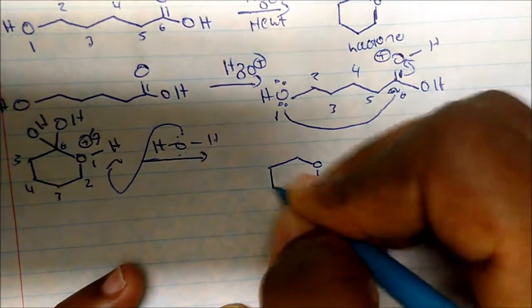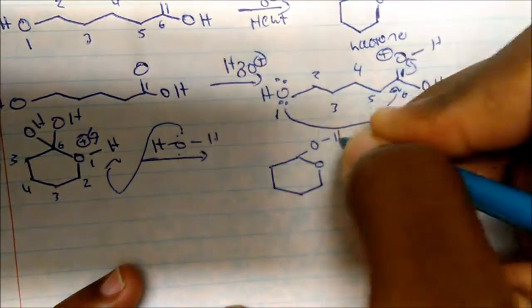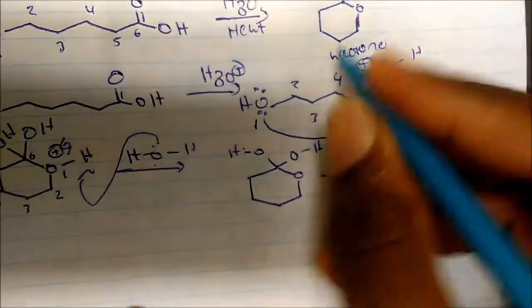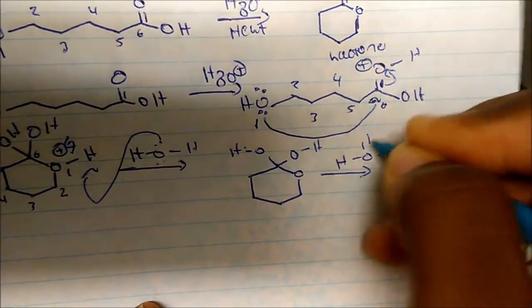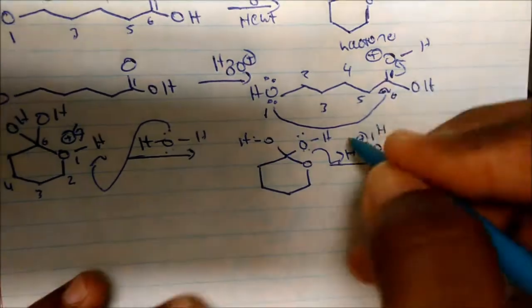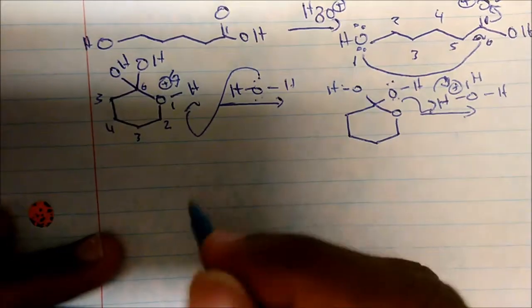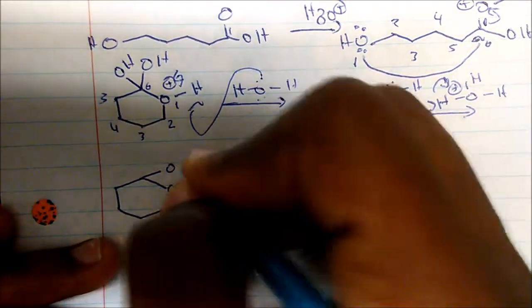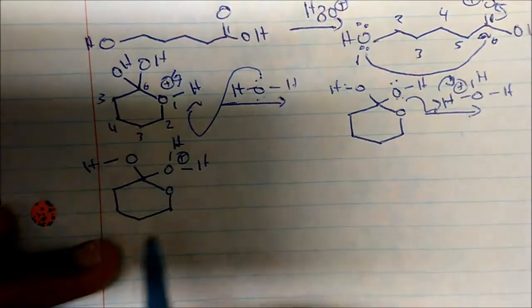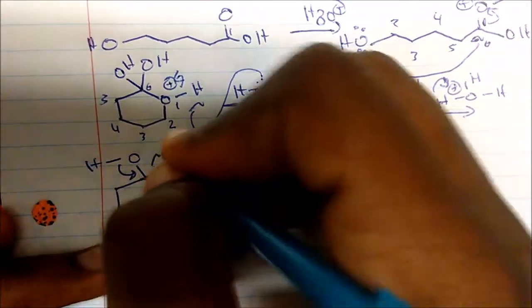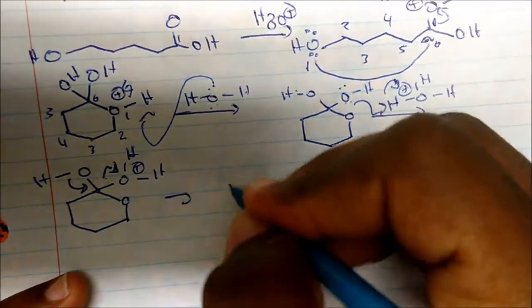Water comes in, takes the proton, and neutralizes the intermediate — we come to a neutral structure. In the next step, remember we just reformed acid, so one of these oxygens will gain protonation and reform water in solution. We end up with an oxygen carrying two hydrogens and a plus one formal charge, and then the bond comes in to form the double bond and expel water as a leaving group.